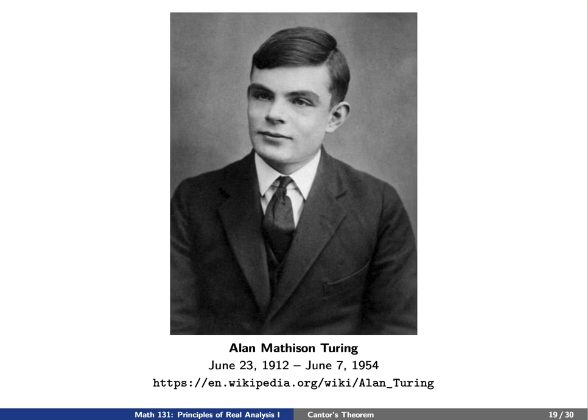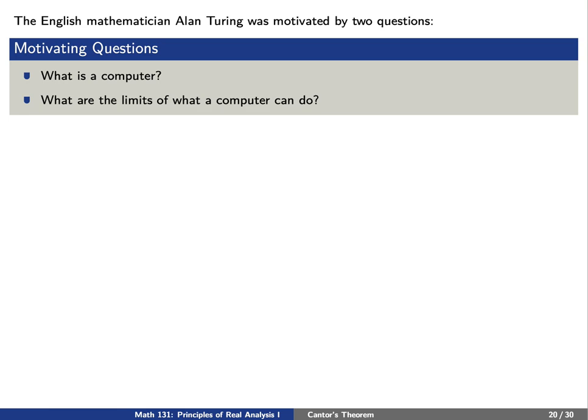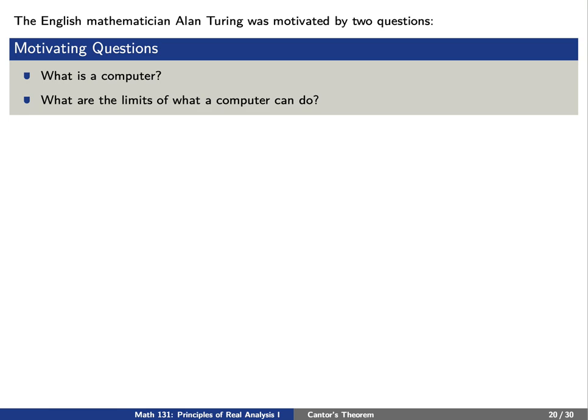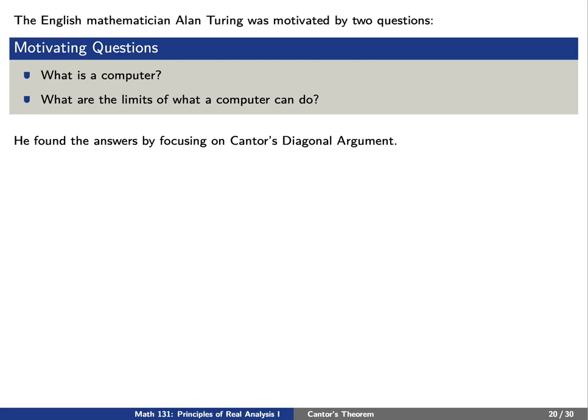We're going to end today with some ideas based on another mathematician named Alan Turing. He was very interested in some of the concepts of Birch and Russell by looking at proofs in terms of sets. Turing was motivated by a couple of different questions. First, he really wanted to know what exactly is a computer and what are some limits on what a computer can do. Curiously, he found answers by focusing on Cantor's original diagonal argument. We're going to discuss what a computer is by writing things in a very rigorous way. We'll say that a computer is a machine that contains programs — which we'll denote by p — such that if we have an input i, it will yield an output p(i).